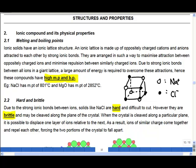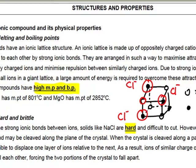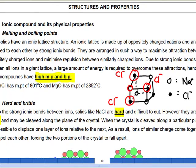In an ionic compound, we say that it has a giant ionic lattice. In this lattice — the example drawn below — the circle represents your sodium plus ion. It is surrounded by many neighboring chloride ions. As they have opposite charges, there are very strong electrostatic forces of attraction. So when trying to melt or boil this compound, you would have to break these very strong forces of attraction. Therefore, a large amount of energy is required, and this results in a high melting point and boiling point.